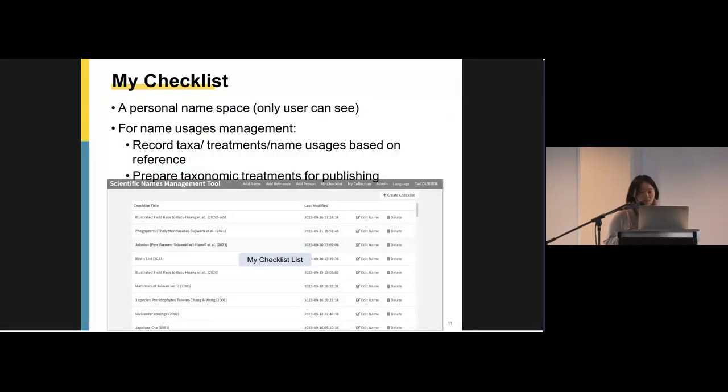And another one. My checklist is another function. My checklist is a personal namespace. Users can create many checklists and edit them here. Users can use it to record taxa based on reference or prepare the taxonomic treatments for publishing. Users can download the documents after editing, then can use it as a part of article.